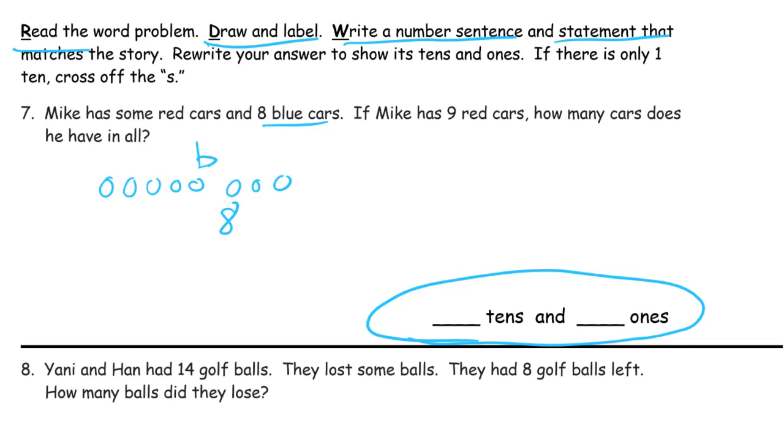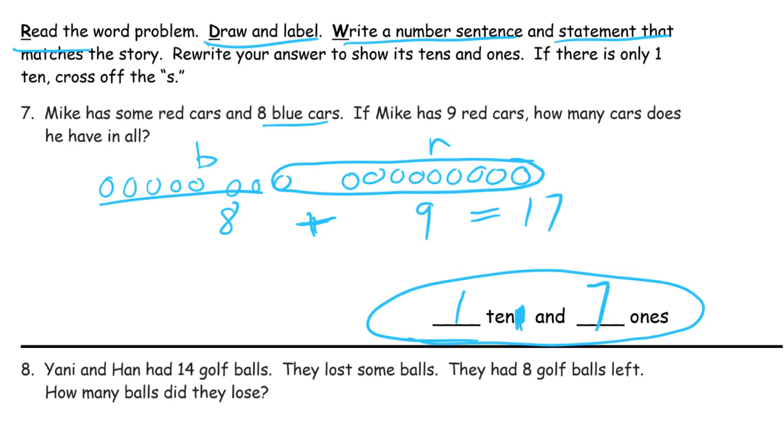There's 8. And then we have the red cars. 1, 2, 3, 4, 5, 6, 7, 8, 9. These are the red cars. 8 plus 9. Now this 9, if I loop in that one there, that's a 10 group. And that's 7 because it's 1 less than 8. So it's 10, 7, it's 17. And 17 is 1 ten and 7 ones. Because there's my 10 group right here. And my 7 ones. Mike has 17 cars. That's a lot of cars. It doesn't say they're toy cars either.